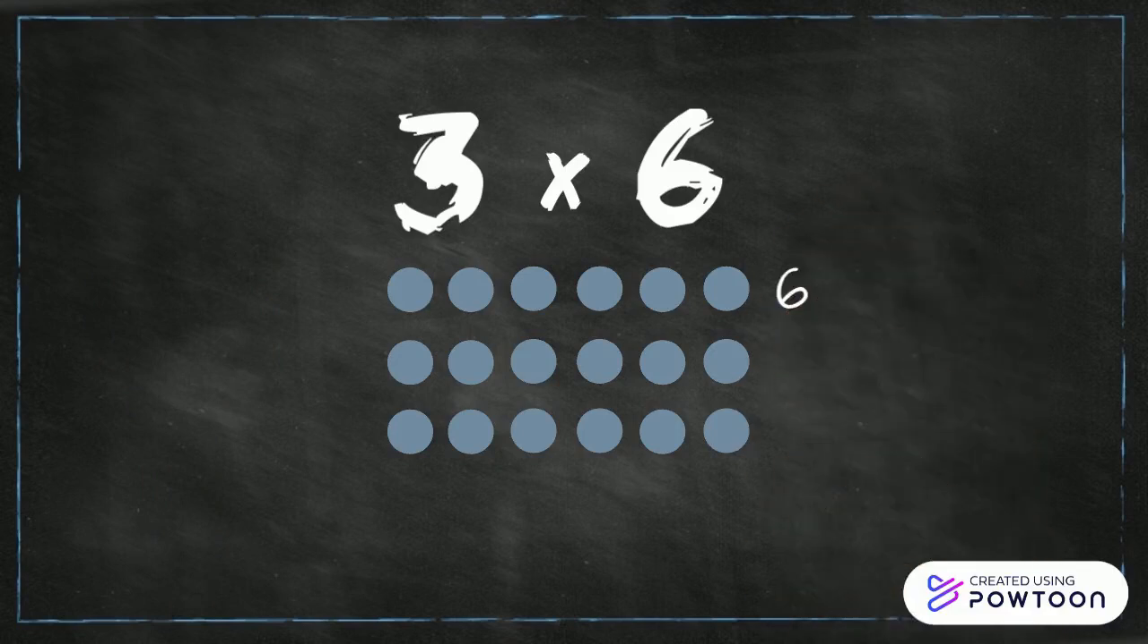Now let's start counting and recording each row. One, two, three, four, five, six, seven, eight, nine, ten, eleven, twelve, thirteen, fourteen, fifteen, sixteen, seventeen, eighteen. Eighteen is our product.